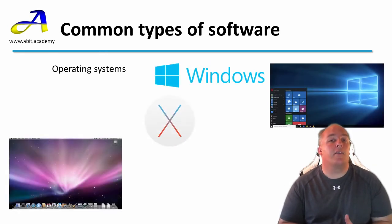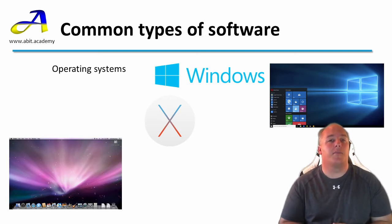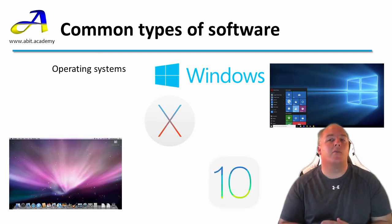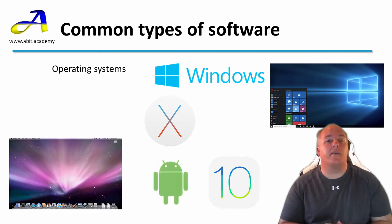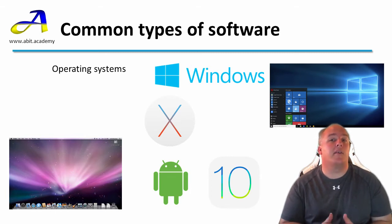Apple Mac OS — High Sierra is the latest version — runs on Apple's laptops and desktop computers. On Apple's mobile devices, phones and tablets, the operating system is called iOS, and the latest version is version 11. Competing with iOS is Google's Android, which runs on a lot of non-Apple phones and tablets from manufacturers such as Samsung, Sony and LG, to name a few.